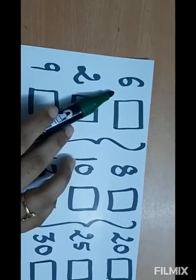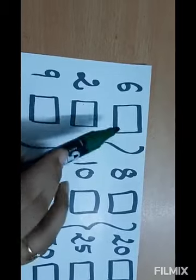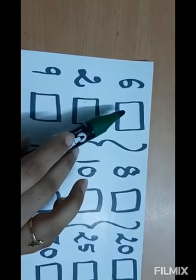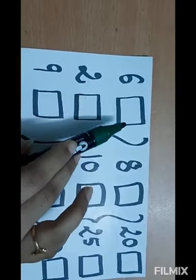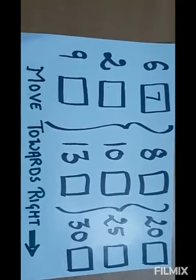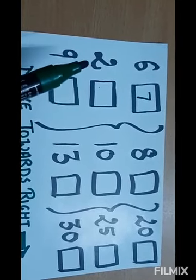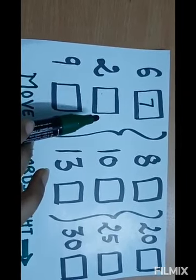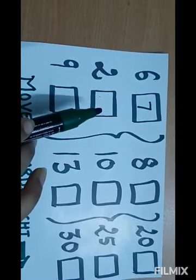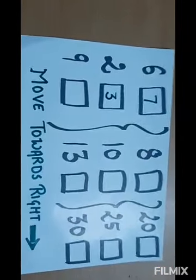What comes after six? We will start counting from six — five, six, and seven — so we write seven here, because after six, seven comes. Now let's see what comes after two. Three comes after two. One, two, and three — so we write three.